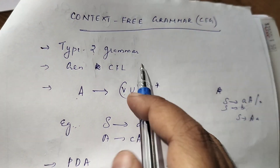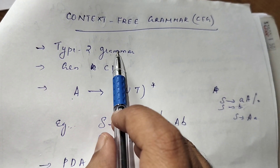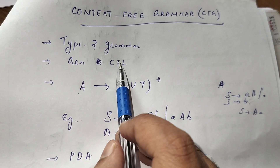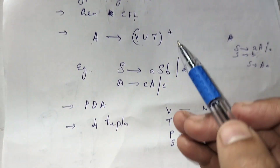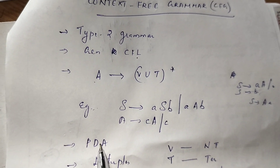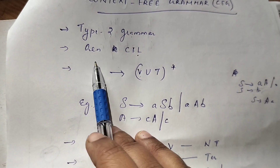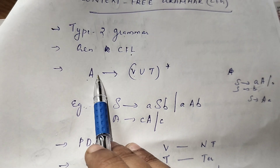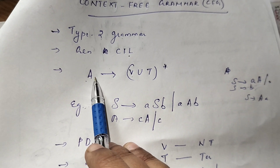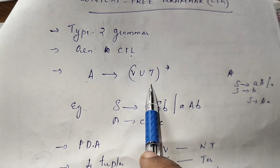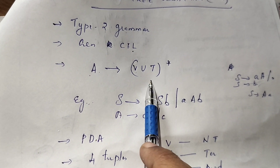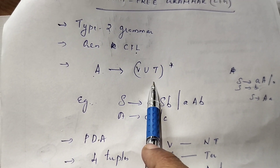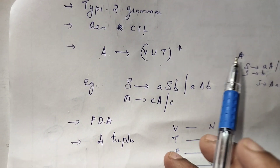To summarize: context-free grammar is a type 2 grammar, it generates context-free languages, and these languages are accepted by pushdown automata. The productions have a single non-terminal on the LHS and a combination of terminals and/or non-terminals on the RHS.